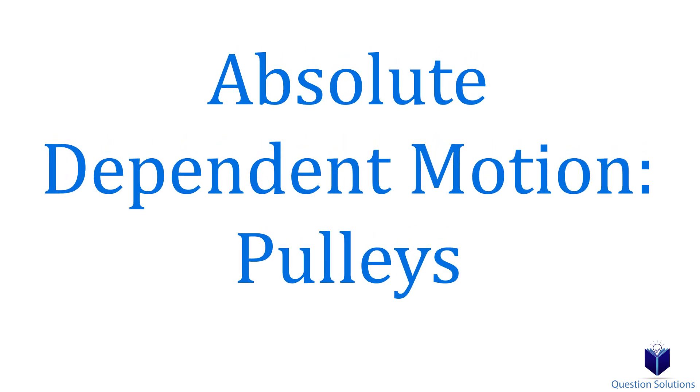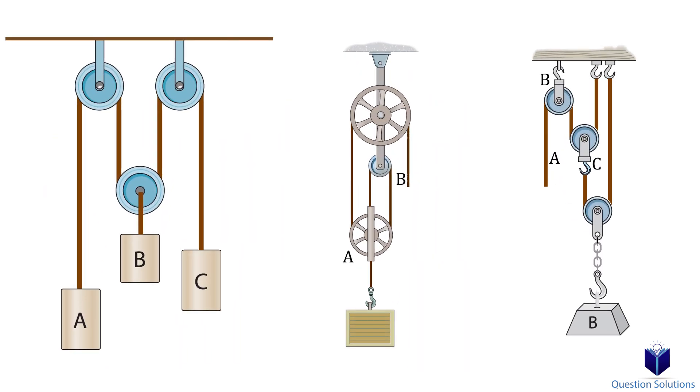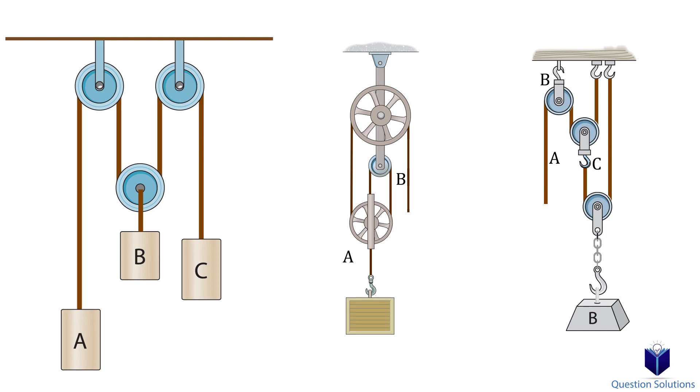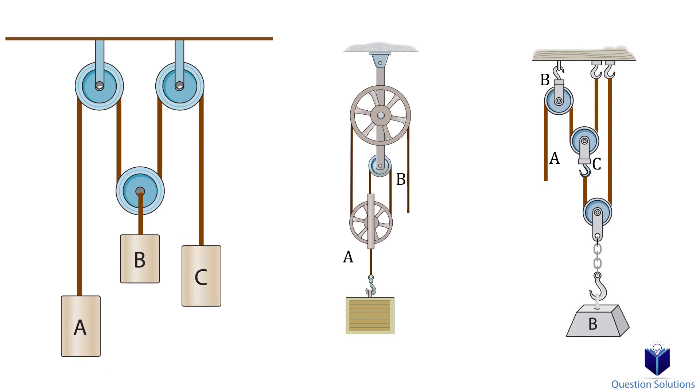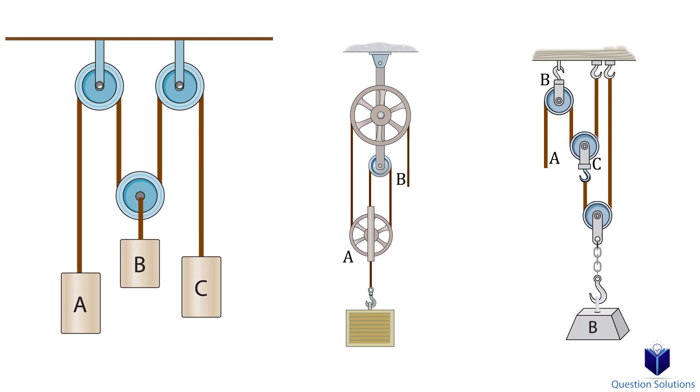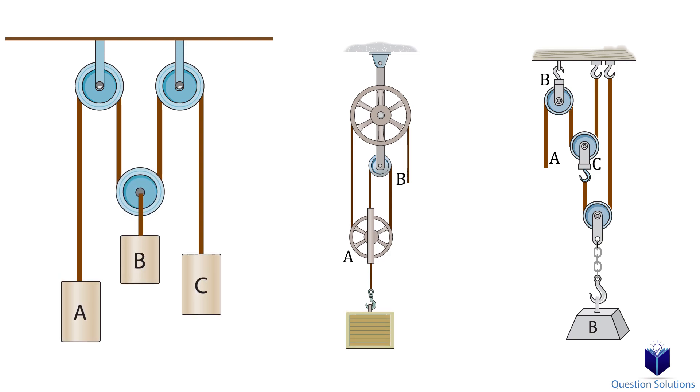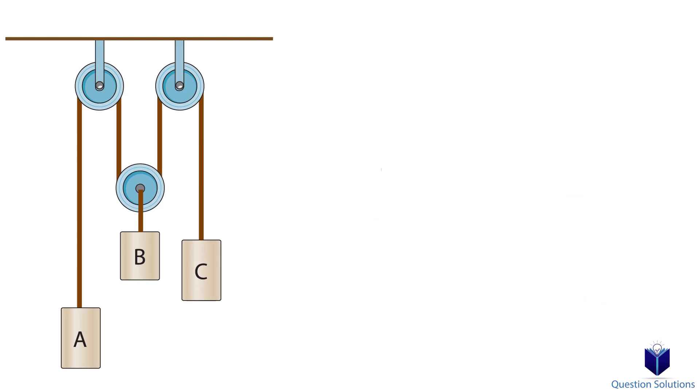This chapter covers the motion of one particle if it's dependent on another particle. In other words, just pulleys attached with cables. The best way to understand it is to do some examples. So let's start off with some easy ones and then a few hard ones.